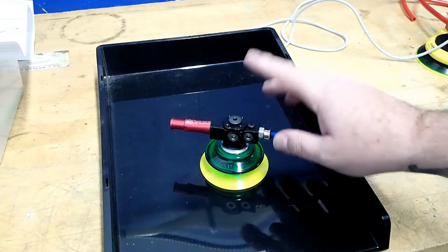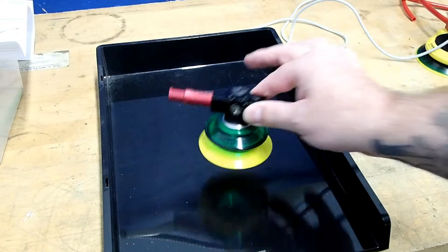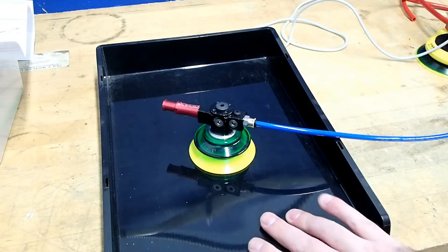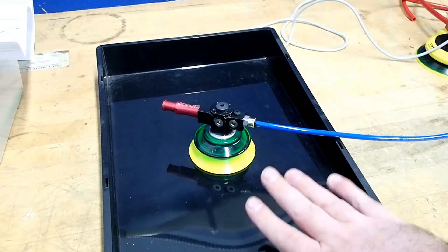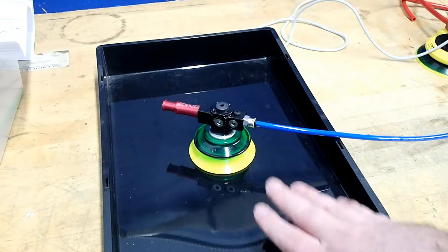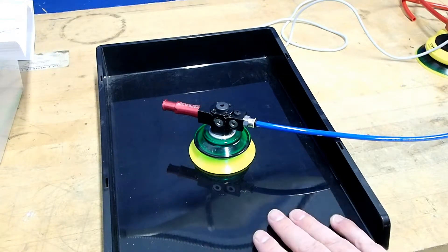So what we have right now is just a typical ejector and cup setup, and we're going to be using this plastic tray to define our airtight surface, be it glass, plastic, or sheet metal.